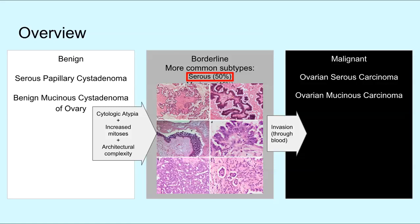Whether or not a borderline ovarian tumor will act in a more aggressive fashion depends on a number of factors, including the presence and the type of extra-ovarian disease or implant status, degree of invasion, and architectural complexity.